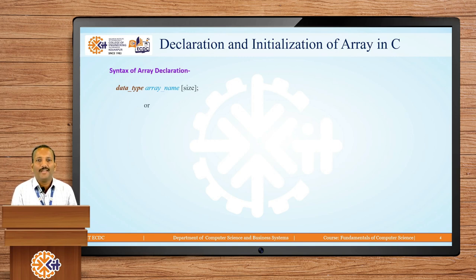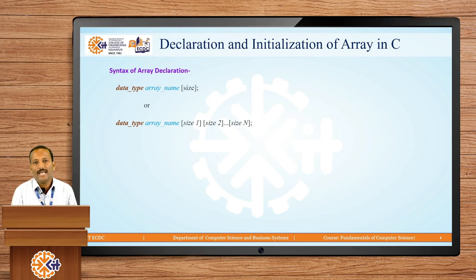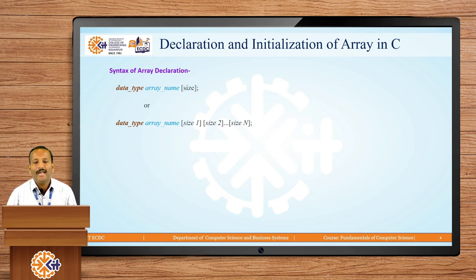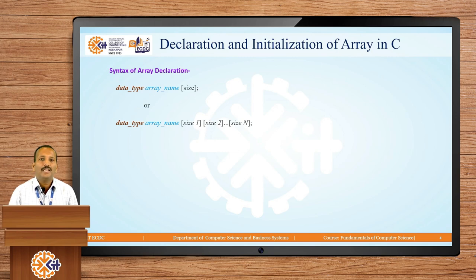We can also define an array another way: first define the data type, then the array name, then size one in the first square bracket, size two in the second square bracket, up to size n. This is called a multi-dimensional array. In the first type we define one name and a single bracket value — that is a single dimensional array. When you provide two or more values, it is called a multi-dimensional array.